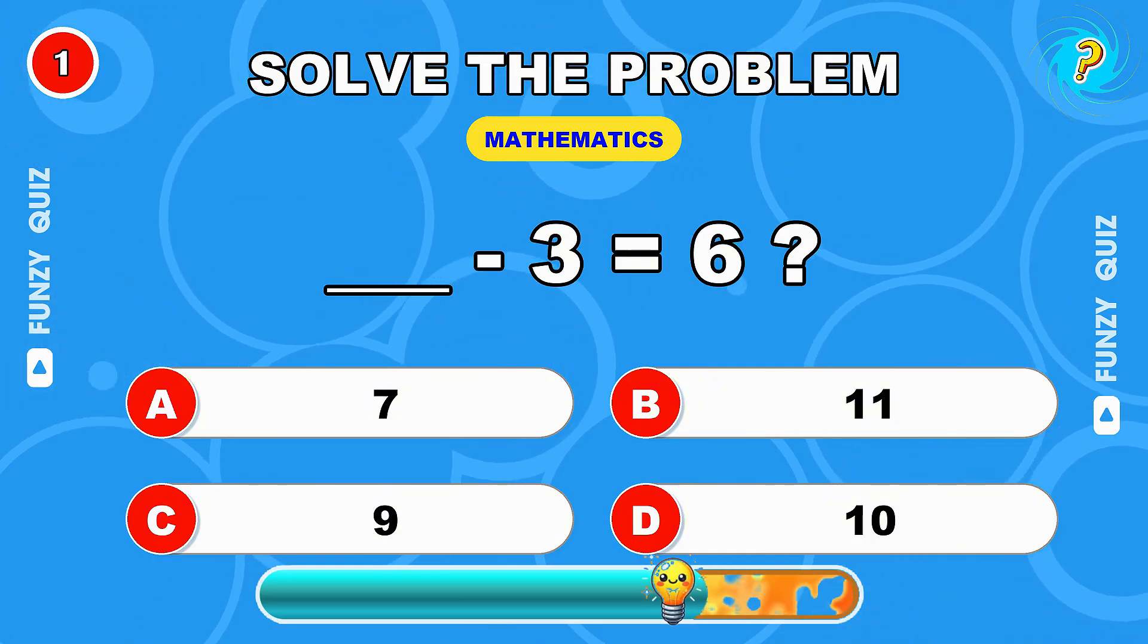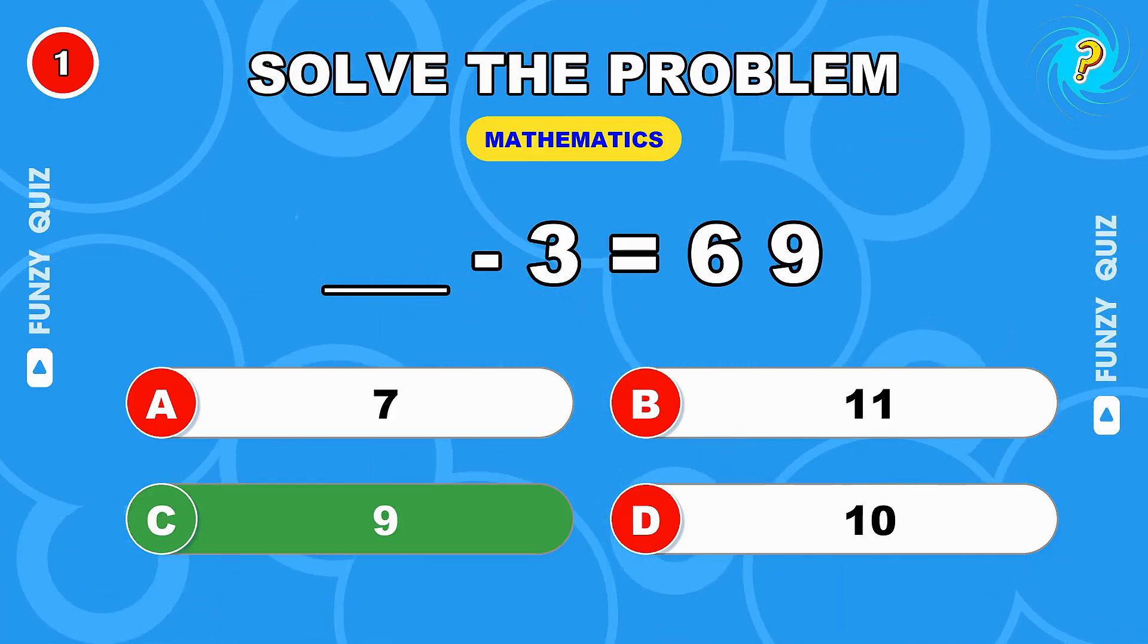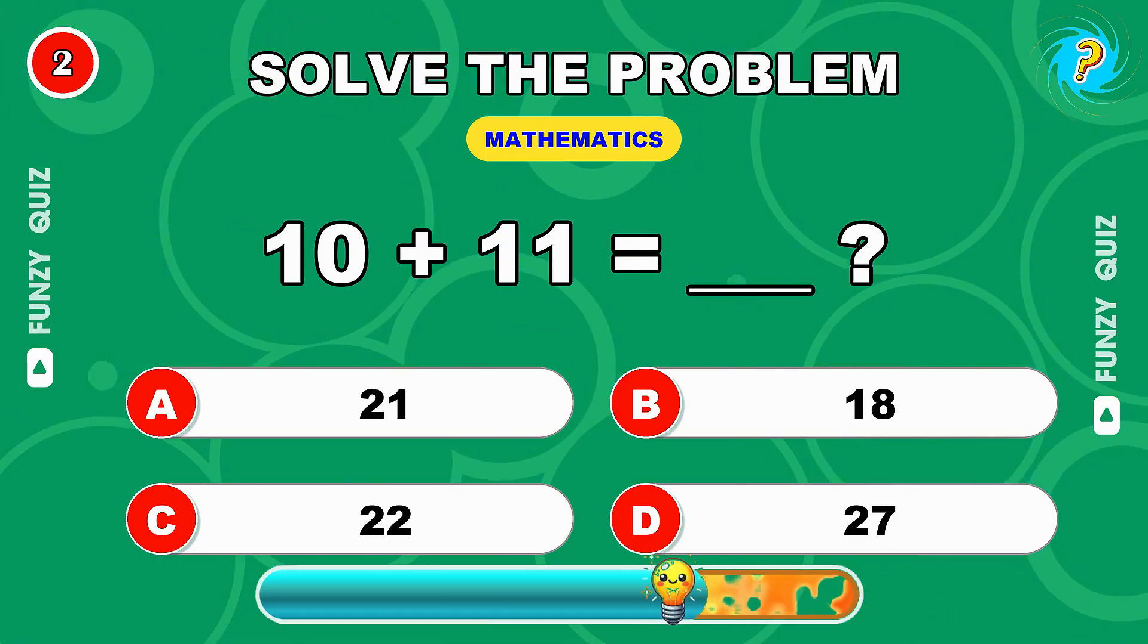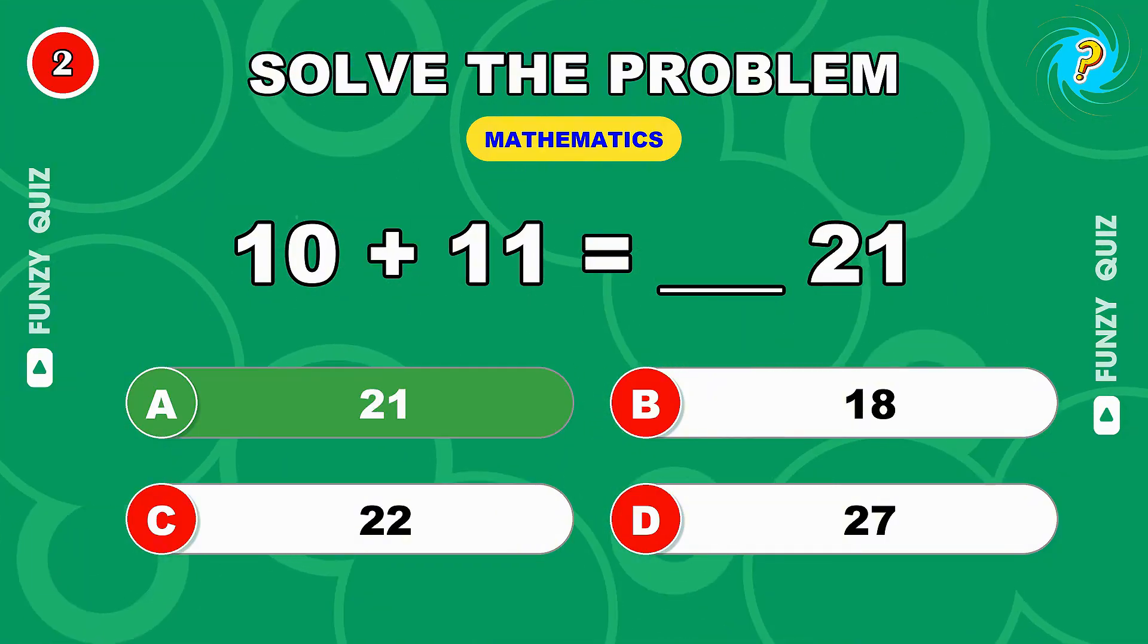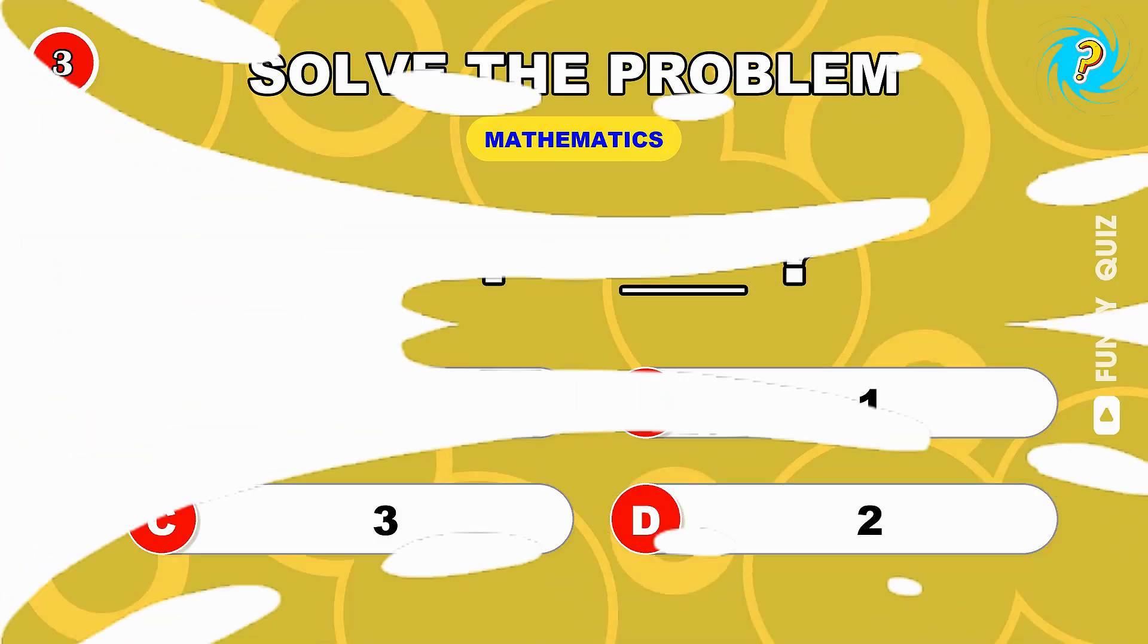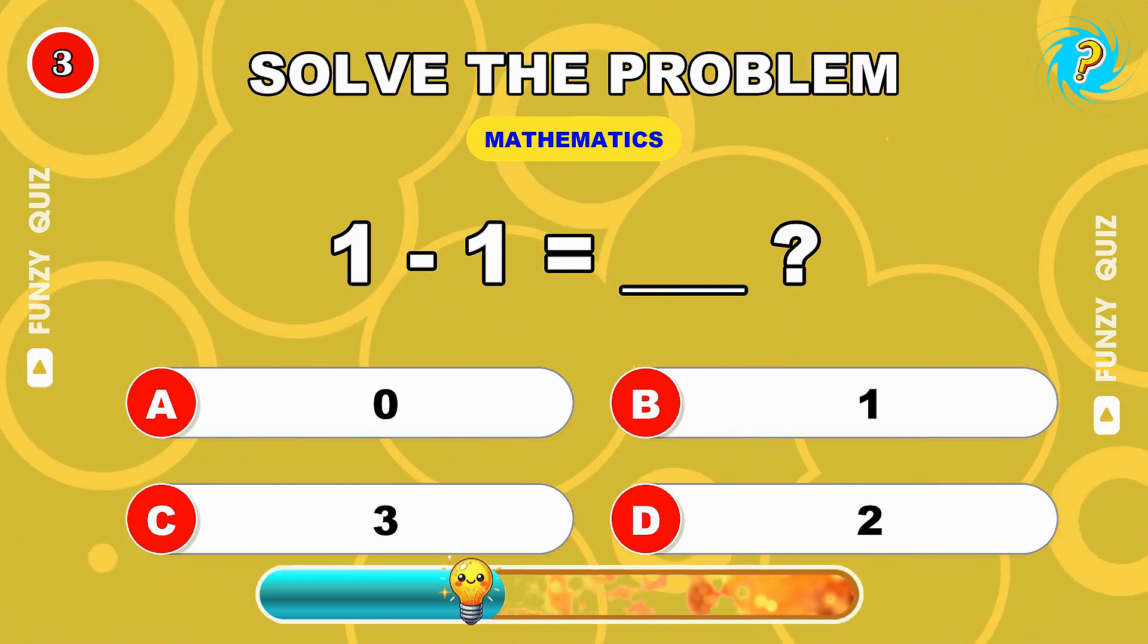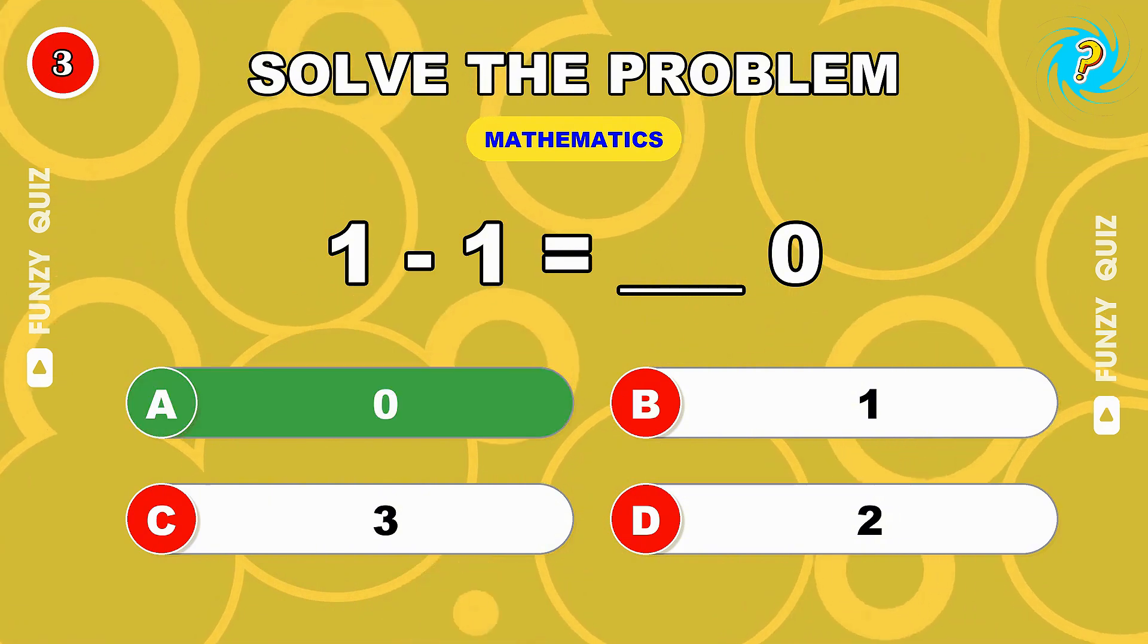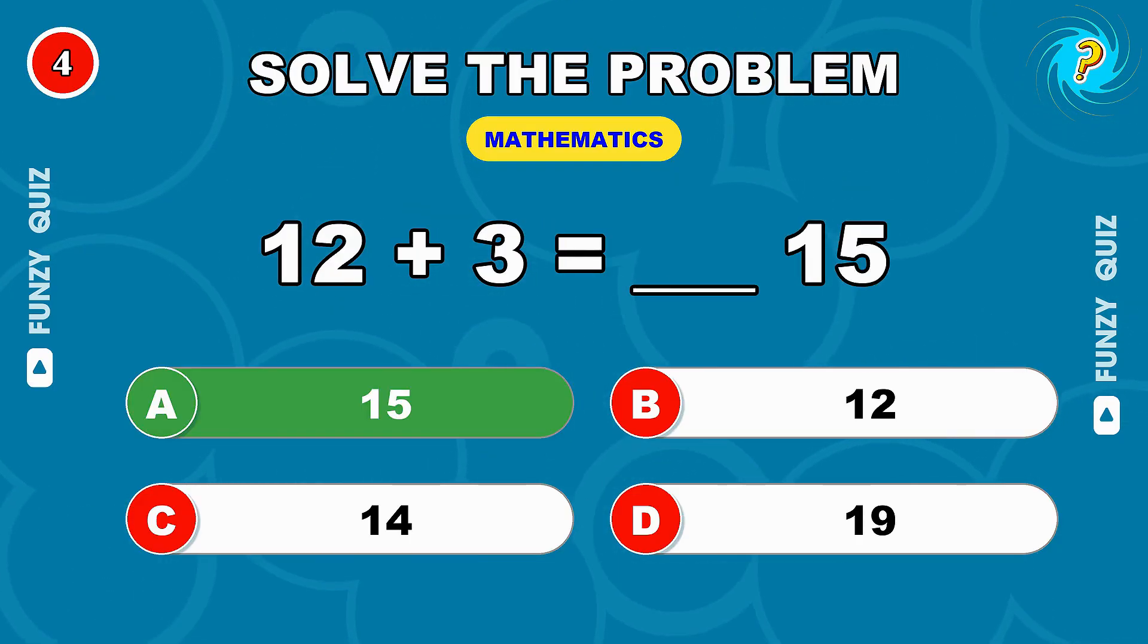What number minus 3 equals 6? The answer is 9. Next question: 10 plus 11 equals what? That's right, 21. Here's an easy one: 1 minus 1. What's 12 plus 3? The answer is 15.